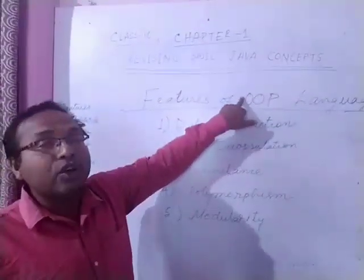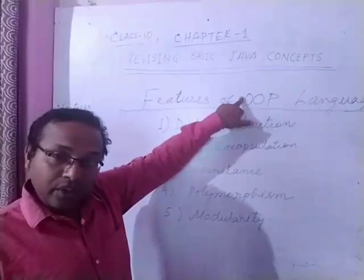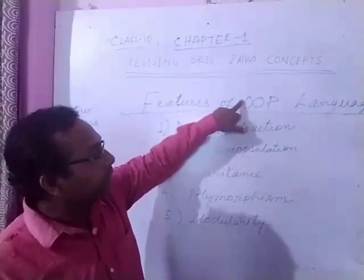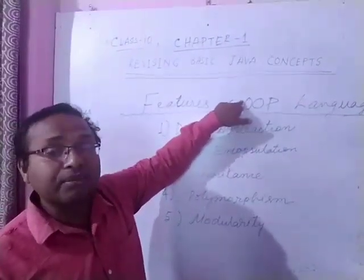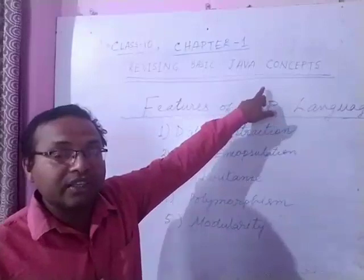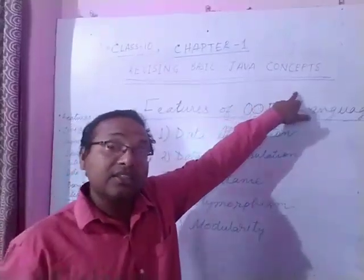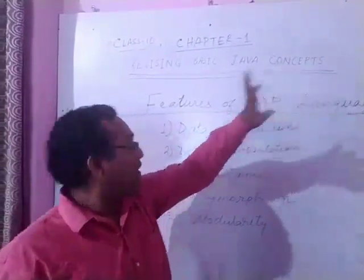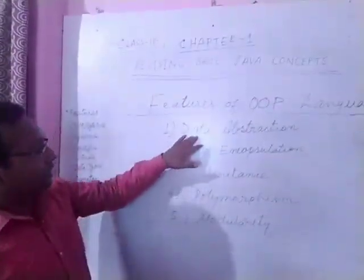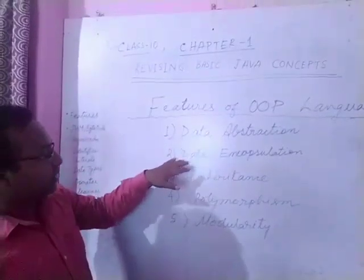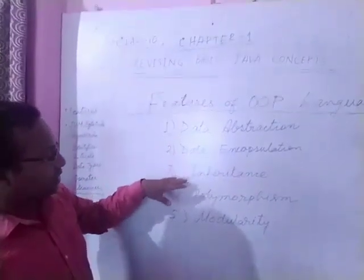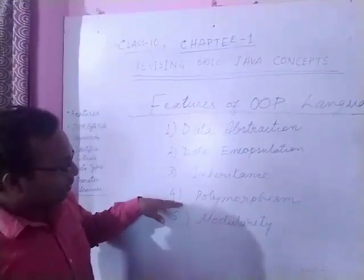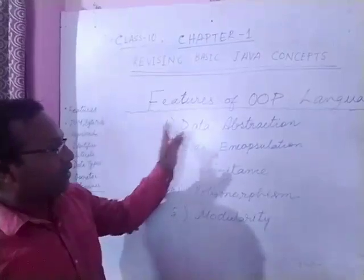OOP stands for Object Oriented Programming Language. Best examples are Java Language and C++ Language. Five features are: Data Abstraction, Data Encapsulation, Inheritance, Polymorphism, and Modularity.